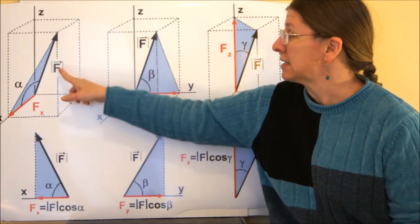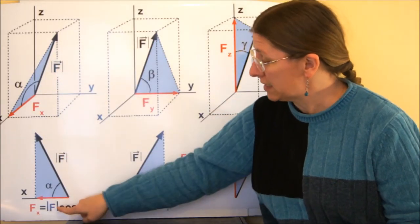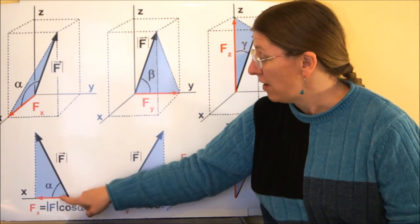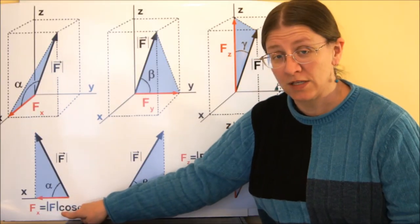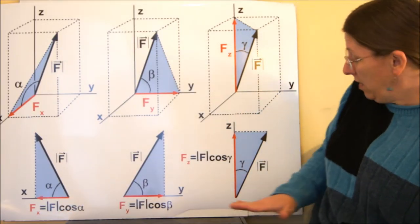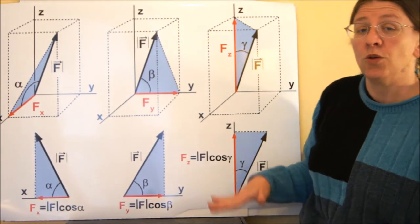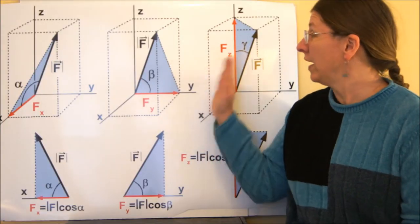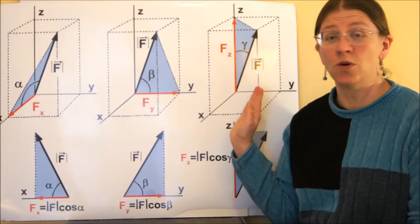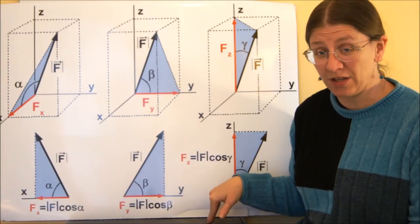Now the nice thing about this is that because it's a projection onto each of the axes, all of these are F cosine alpha, F cosine beta, and F cosine gamma. So once you understand what it is, moving direction cosines into Cartesian form is really easy. It's just the cosine of each of the angles.